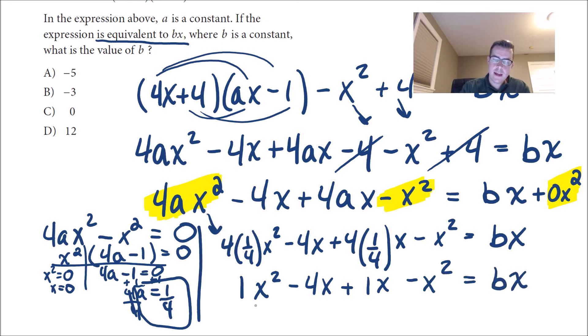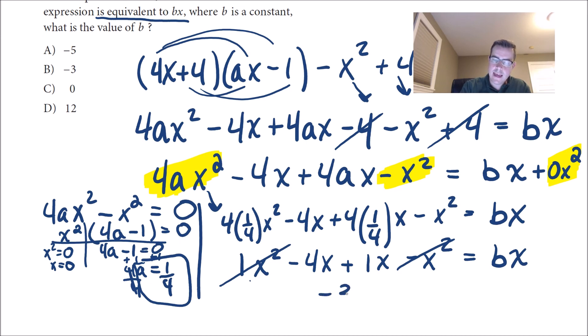And this does exactly what I wanted to. Now we have one x squared minus one x squared, so those two will reduce down to zero. So now I'm left with negative four x plus one x would be negative three x equals bx. So b would have to be negative three, because I just need this side to equal that side.